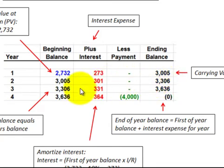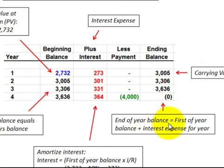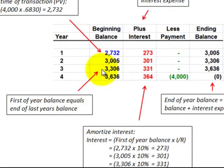We do the same for years three and four. In year four, we had a beginning balance of $3,636, plus interest expense of $364, giving a balance of $4,000. Then we subtract the payment — we paid off the notes payable of $4,000 — so we have an ending balance of zero. The end-of-year balance equals the beginning balance plus the interest expense for the year, where the interest is the beginning balance times the interest rate. The beginning balance of each year is the ending balance of the prior year.